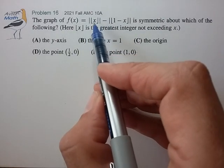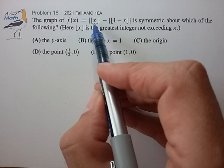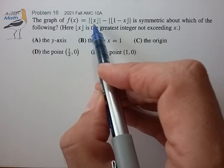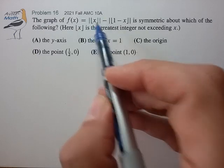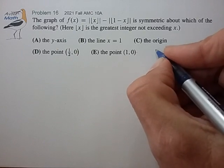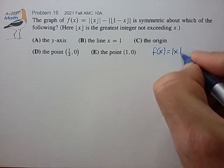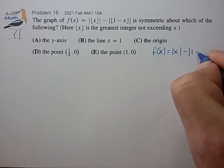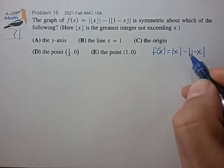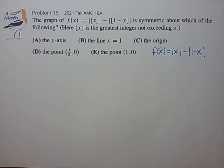Now, I know the floor function of x roughly follows the behavior of x, so let me look at something a little bit simpler. Let me look at f(x) equals absolute value of x minus 1 minus x to look for clues on how I could solve the original problem.